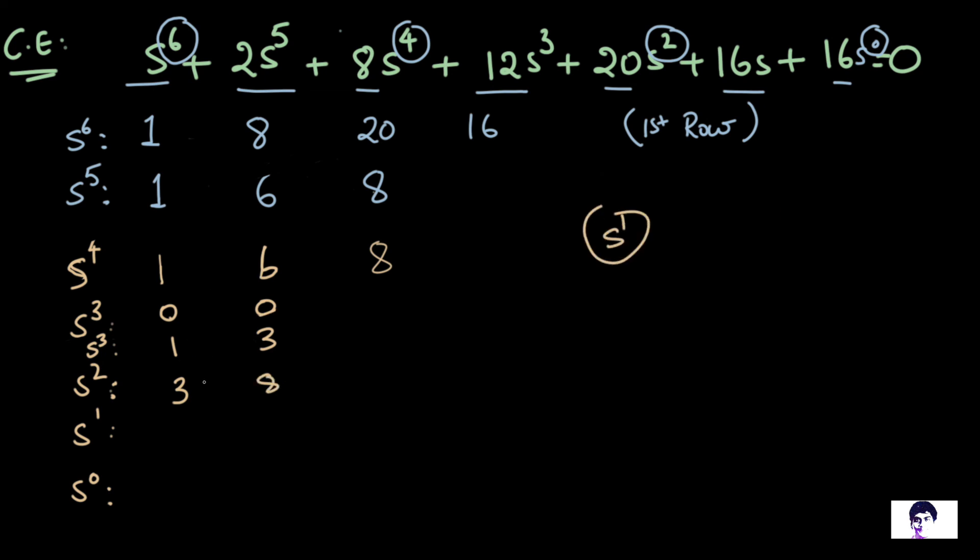And for the first element of S^1, we have 3 into 3 minus 1 into 8 by 3. So that would be 9 minus 8, 1 by 3, I'm going to write that down as 0.33. And as you can notice there are no further elements, the next element is just going to be 1 into 0 minus 3 into 0 by 3, which is 0, or you can just leave it.